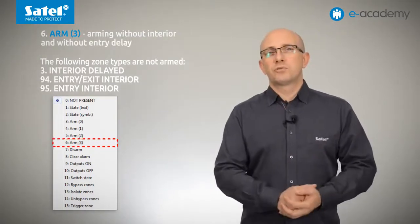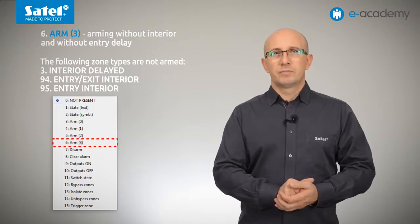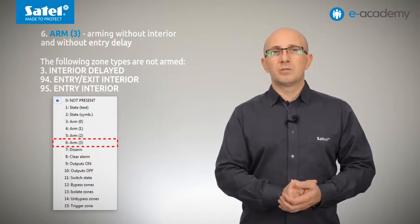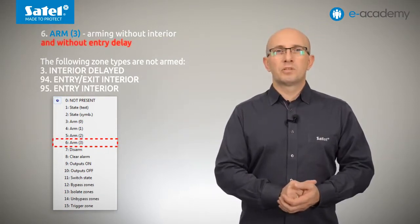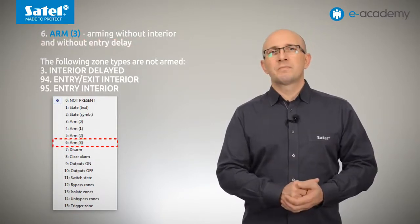The last mode of arming is item six on the list, namely arm 3. This mode is similar to the previous one, however, the system will not start the entry delay countdown. When will it be useful? For example, in a situation where you stay in the premises,